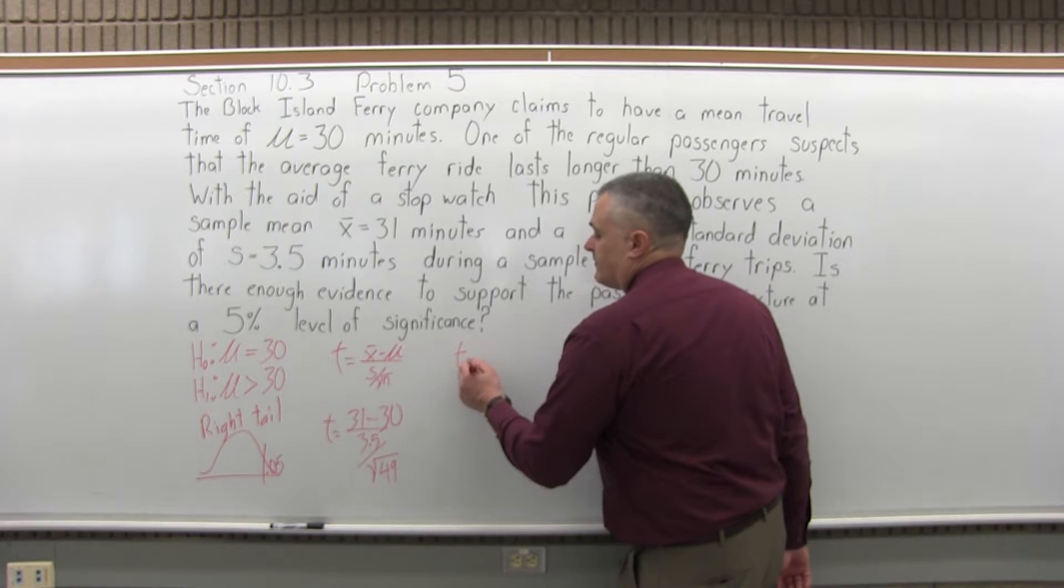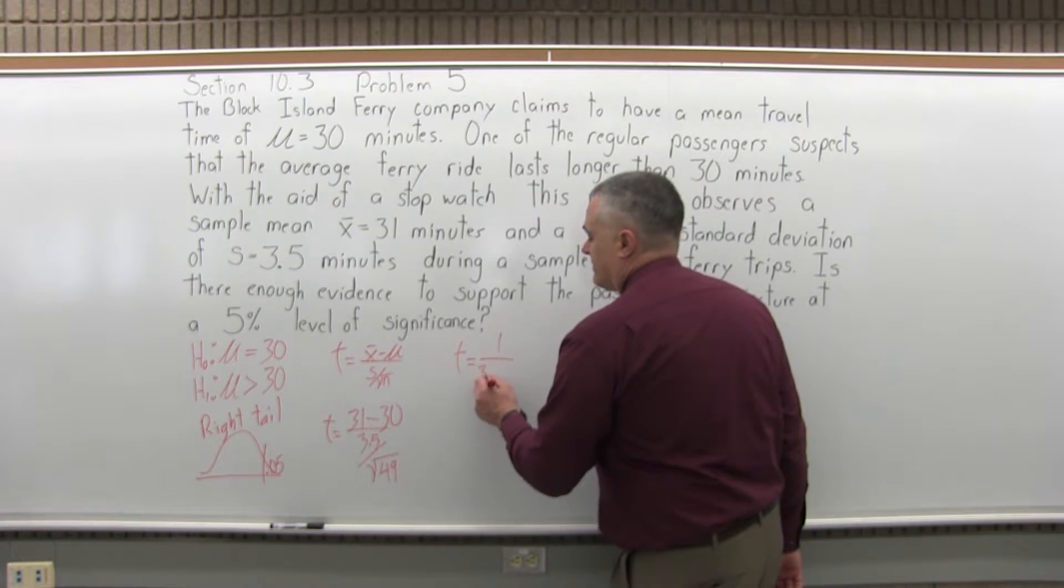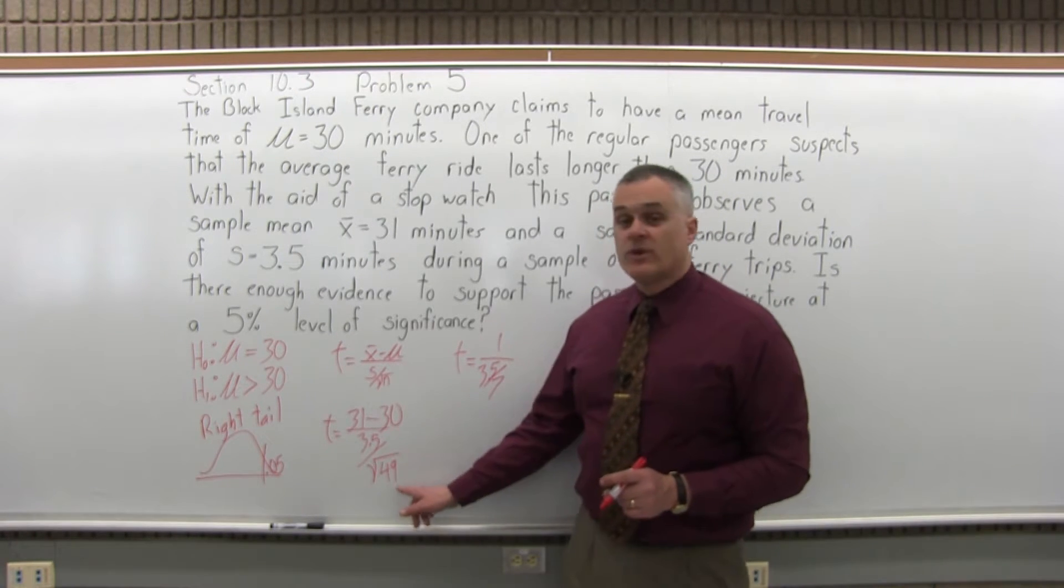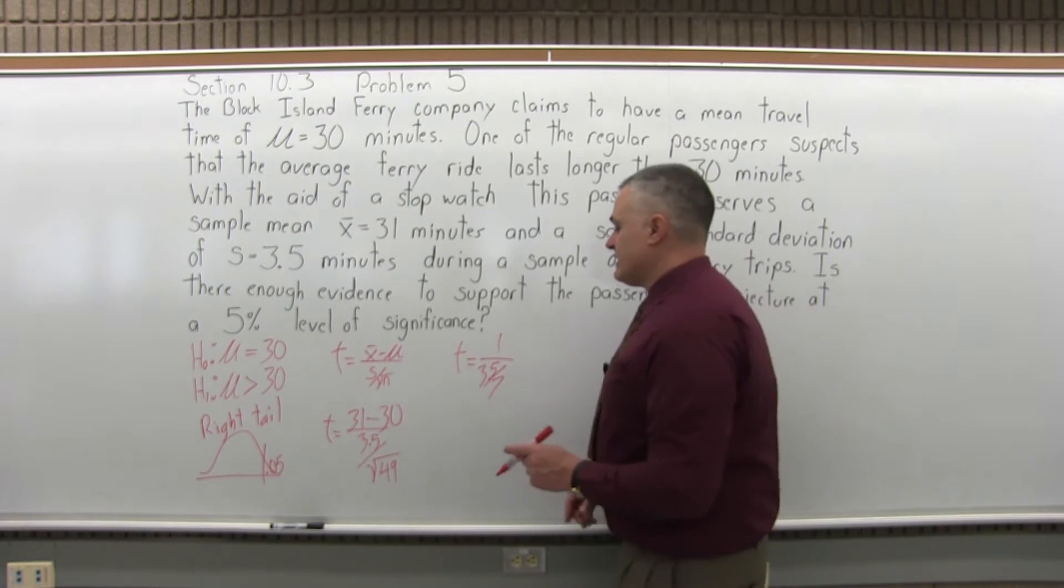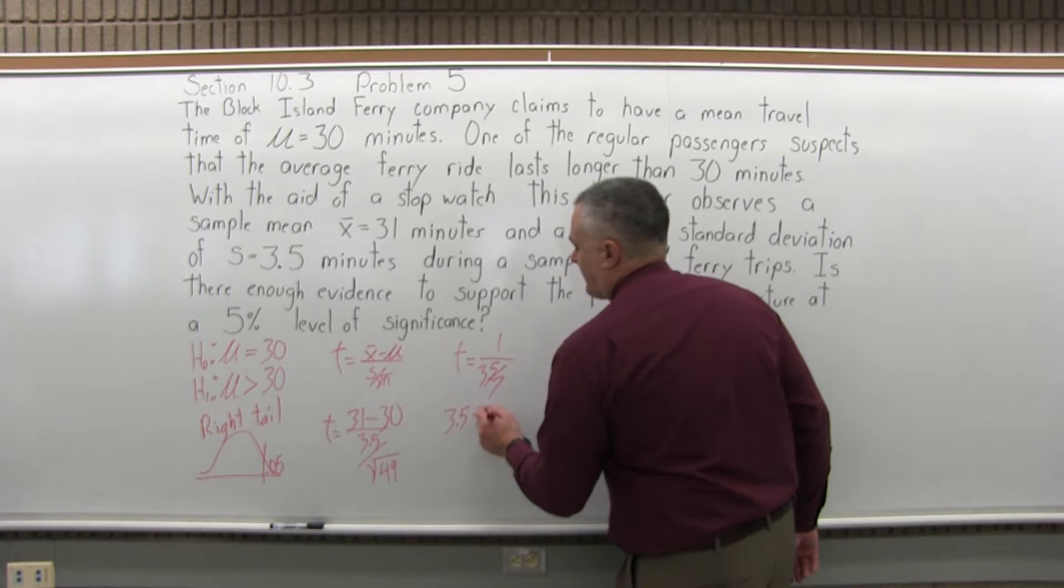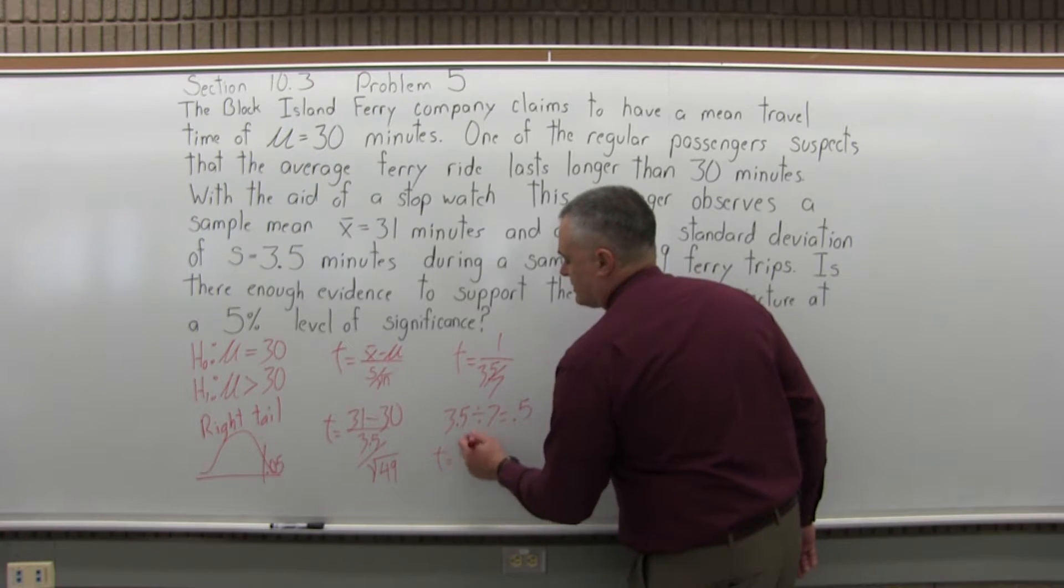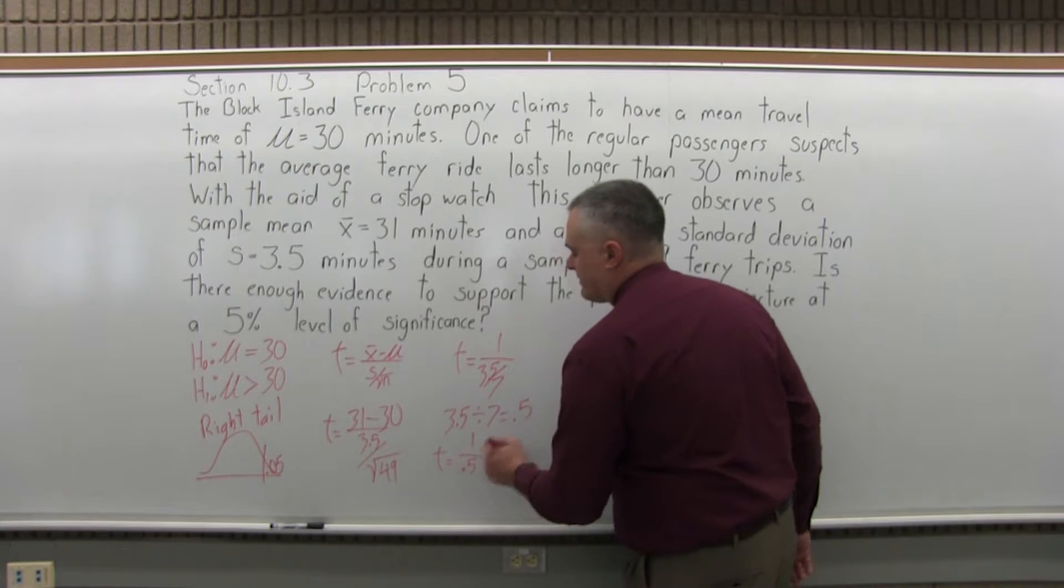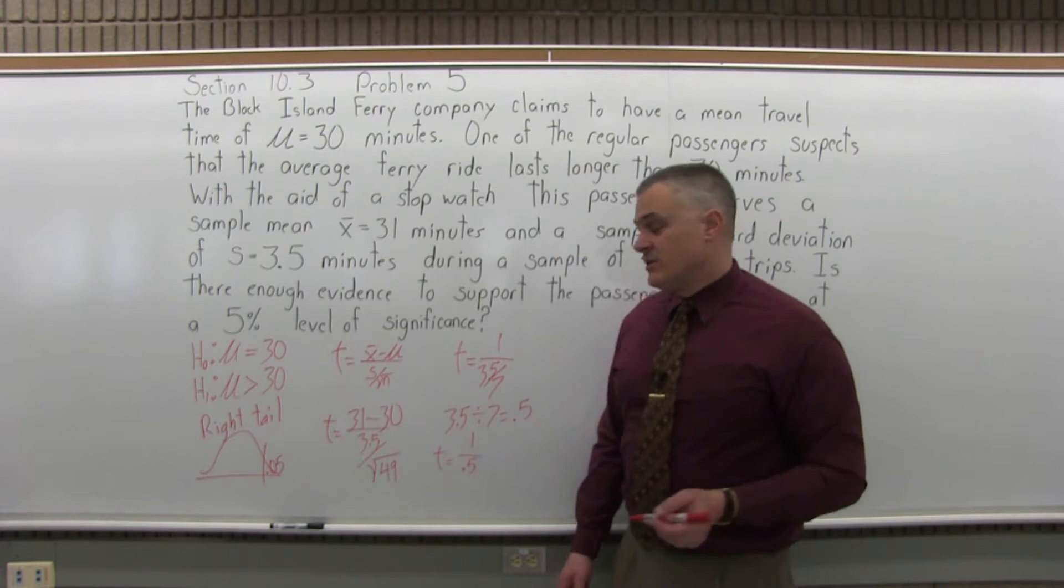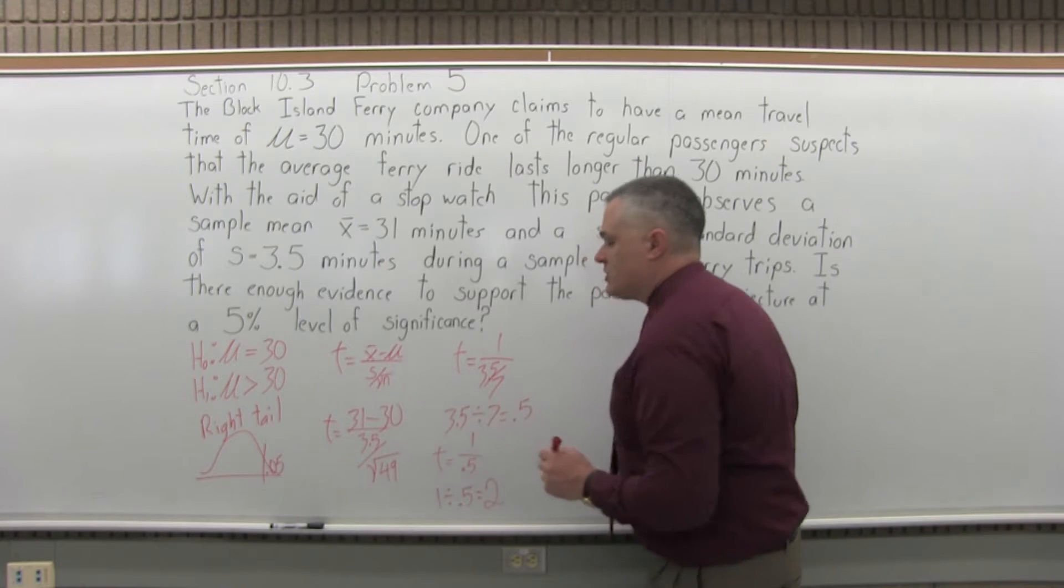So in the numerator, 31 minus 30 is just 1. That's easy enough. And in the denominator, I'll have 3.5 over 7, because the square root of 49 is 7. And now I can simplify that denominator: 3.5 divided by 7 is going to give me 0.5. So my computation for t is 1 over 0.5. You can do that on the calculator: 1 divided by 0.5 is 2.